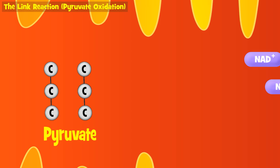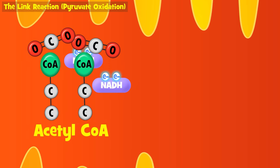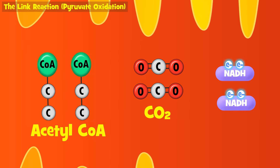Once inside, pyruvate is oxidized, transferring electrons and hydrogens to NAD+, to form our favorite electron carrier, NADH. This also breaks down the pyruvate, causing the release of CO2.